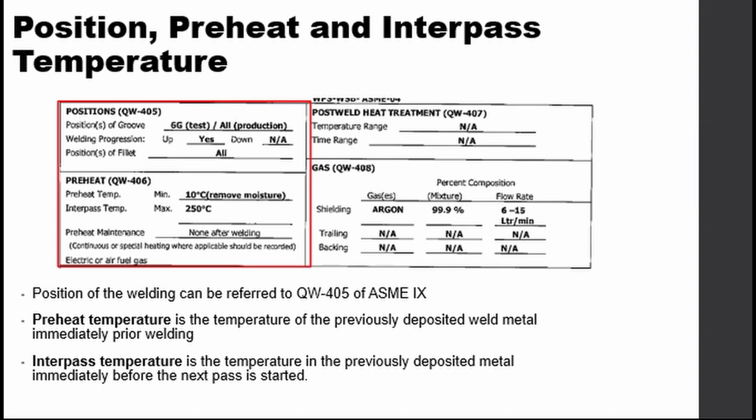Interpass temperature is the temperature of the previously deposited weld metal immediately before the next pass is started. This is the temperature limit at which the next pass is allowed to be welded.